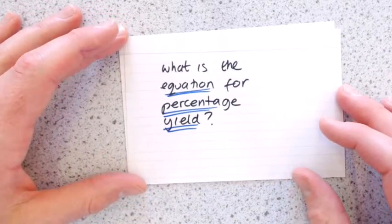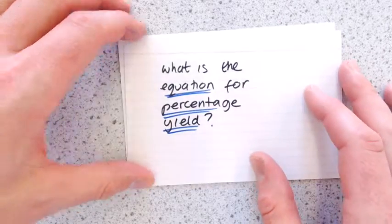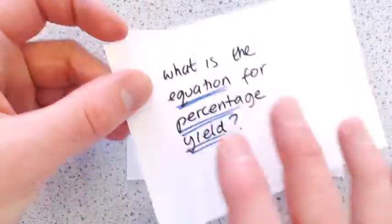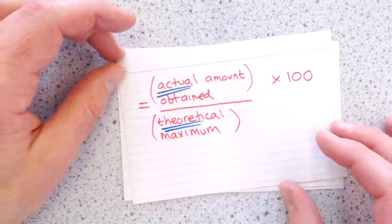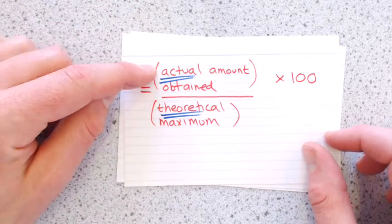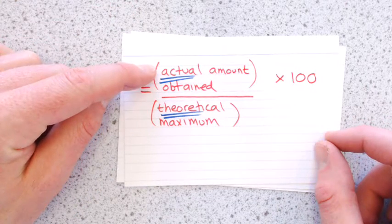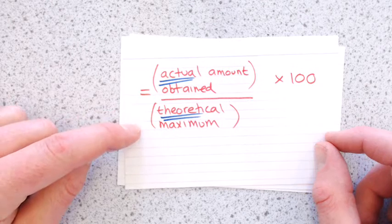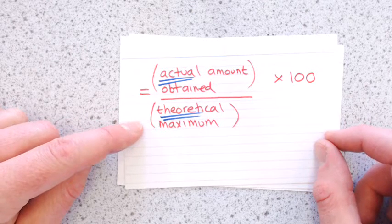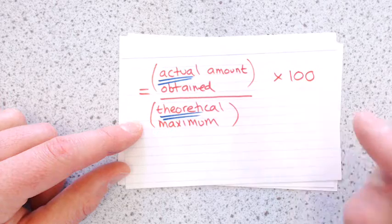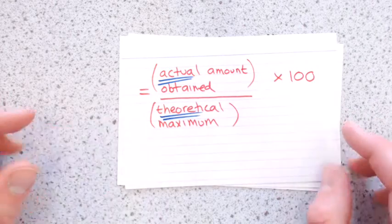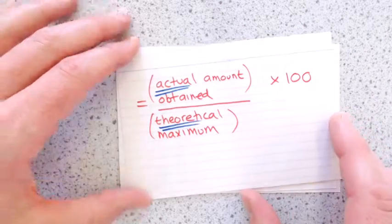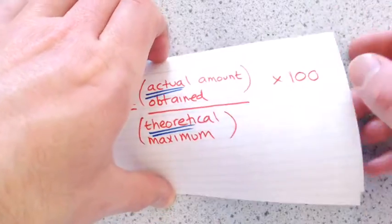What's the equation for trying to work out percentage yield? So the equation is you take the actual amount that you get from your reaction, you divide it by the theoretical maximum amount that you could have got, and you multiply it by 100. I haven't made a video for this yet, but there probably will be one coming shortly. I'll talk you through those.